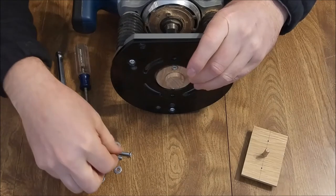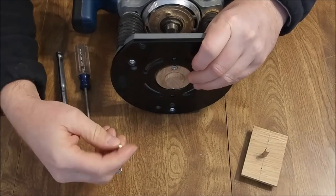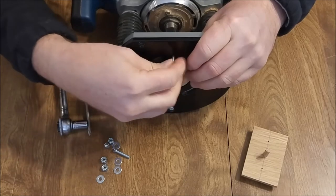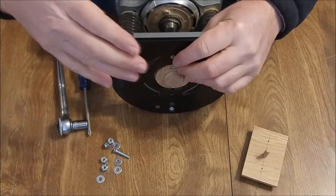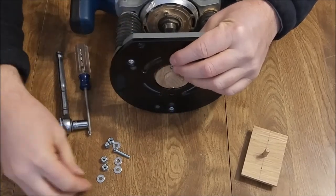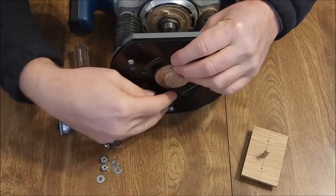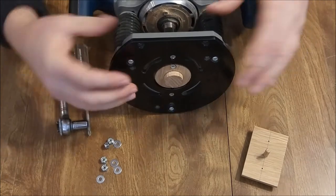Then you'll take another two sets of the exact same hardware and install the bushing base part to your plunge base itself. Really, that's it.